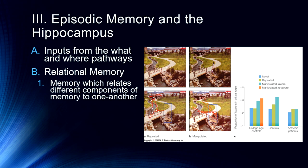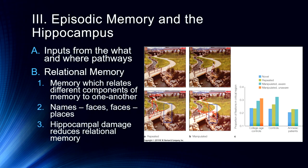This leads to relational memory — memory that combines or relates different components together, such as remembering a name with a face, or a face with a place. In a study shown on the right, researchers looked at adding and subtracting people from views for college-age controls and amnesic patients. Amnesic patients were less aware of the removal of face-place bindings — they didn't notice things were missing — whereas non-amnesic controls did. This shows that hippocampal damage reduces relational memory by failing to bind items and context together.